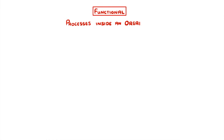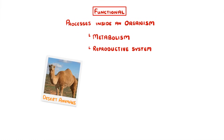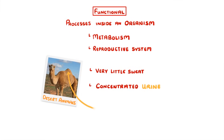Functional adaptations are the hardest ones to notice. These relate to processes going on inside an organism's body, like their metabolism or reproductive system. For example, many desert animals conserve water by producing very little sweat and only small amounts of concentrated urine. While camels accumulate lots of fat in their humps, which they can then break down later to release water.